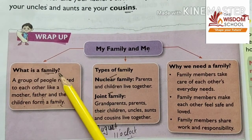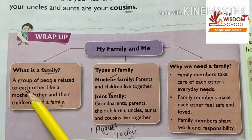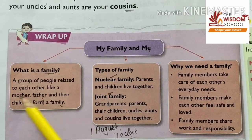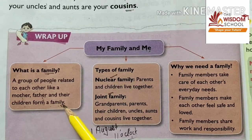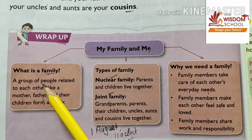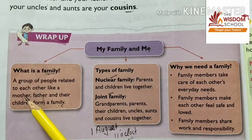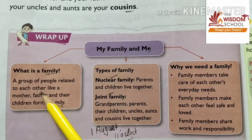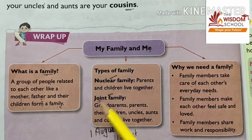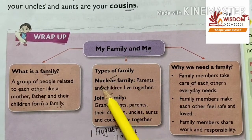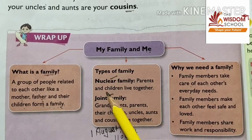What is a family? A family is a group of people related to each other, like a mother, father, and their children, who form a family.